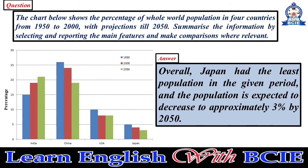Overall, Japan had the least population in the given period, and the population is expected to decrease to approximately three percent by 2050.